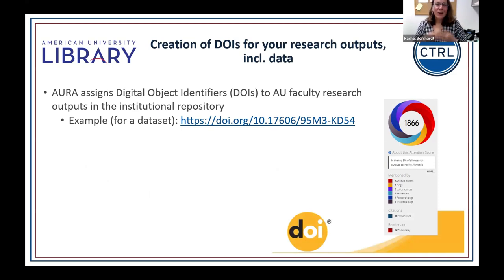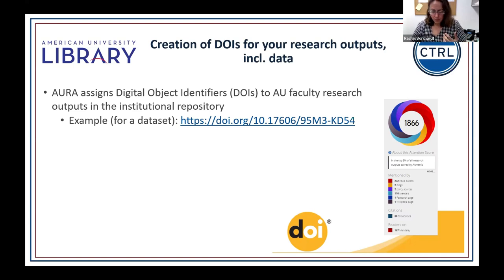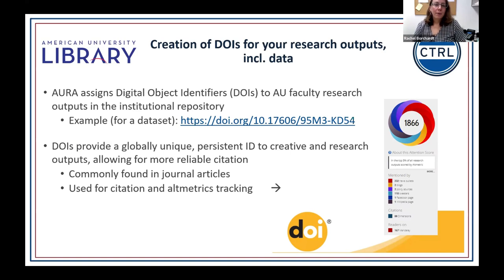I promised to talk about DOIs. AURA assigns a DOI, or digital object identifier — I like to refer to it as a social security number for research outputs. Just like ORCID is a unique ID assigned to a researcher, DOIs are numbers assigned to individual journal articles, data sets, or other research materials. They provide a global, persistent way to track information. URLs can sometimes disappear or change over time, but DOIs are designed to be more reliable.